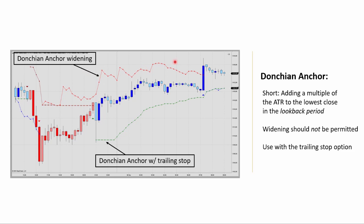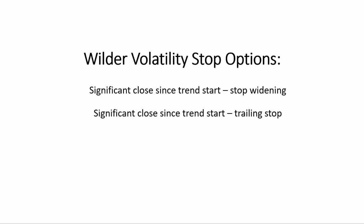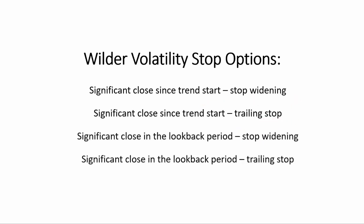It doesn't really make any sense to use it that way. So in conclusion, the Wilder Volatility Stop has the following options: the significant close since the trend starts, stop widening, or the trailing stop option. And as we saw with the Donchian anchor: significant close in the look-back period, stop widening, and trailing stop — definitely use it with the trailing stop option.